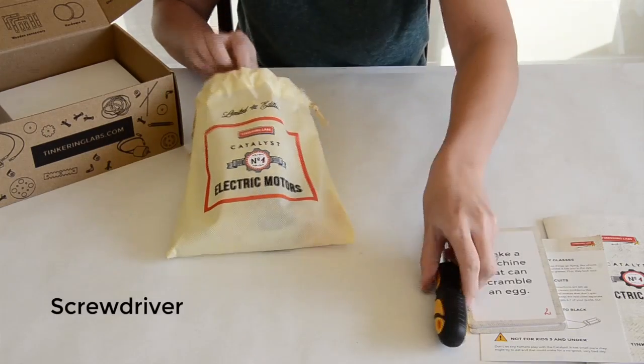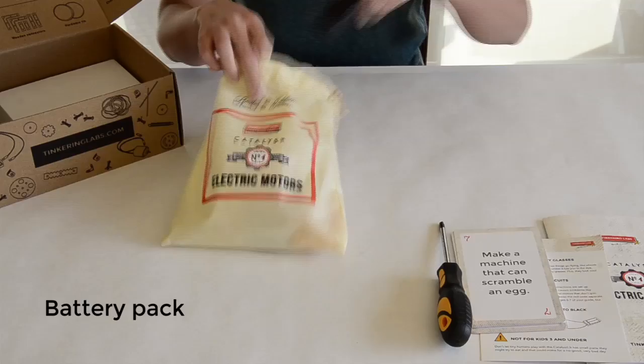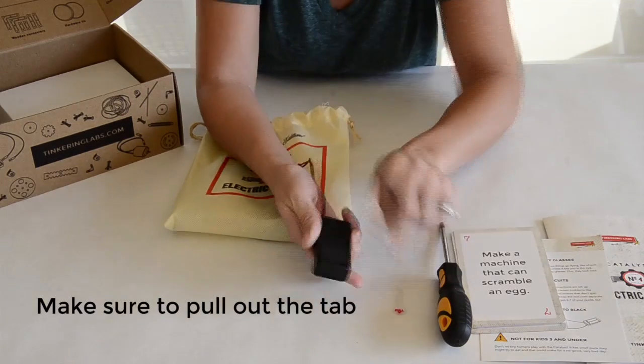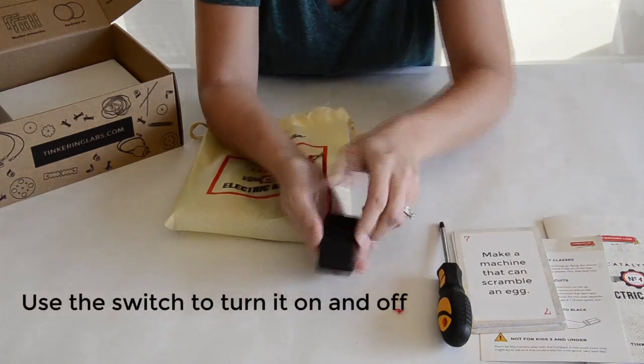The kit comes with a screwdriver and battery pack. Make sure to pull this tab out so that your battery pack works, and you can use the switch to turn it on and off.